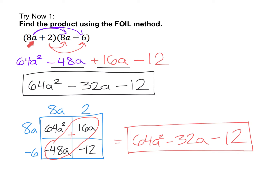Here is your solution using the FOIL method. 8a times 8a is 64a squared. 8a times negative 6 is negative 48a. Then for our insides: 2 times 8a is 16a, and 2 times negative 6 is negative 12. Combining like terms gives us 64a squared minus 32a minus 12. It's also okay if you did this with the box method — with 8a plus 2 on top and 8a minus 6 on the side, after combining 16a and negative 48a to get negative 32a, you end up with the exact same answer. Feel free to use the method that makes the most sense to you.